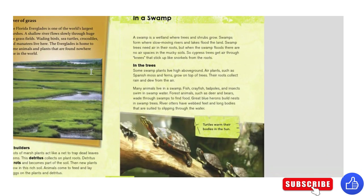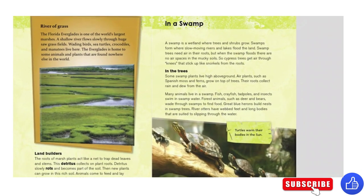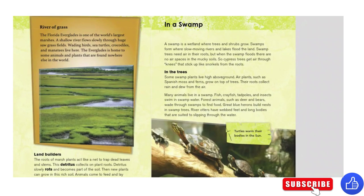River of Grass. The Florida Everglades is one of the world's largest marshes. A shallow river flows slowly through huge sawgrass fields. Wading birds, sea turtles, crocodiles, and manatees live here. The Everglades is home to some animals and plants that are found nowhere else in the world.